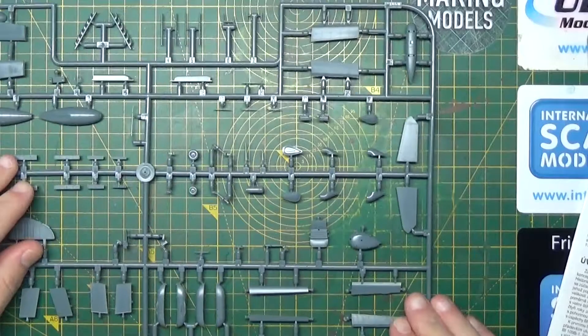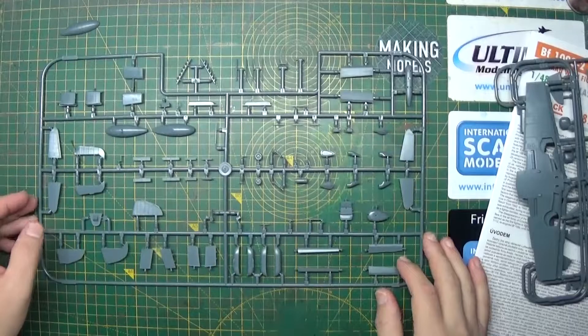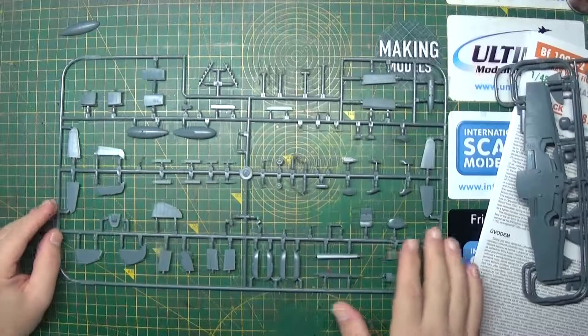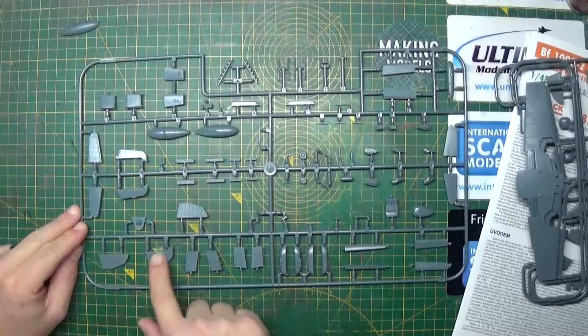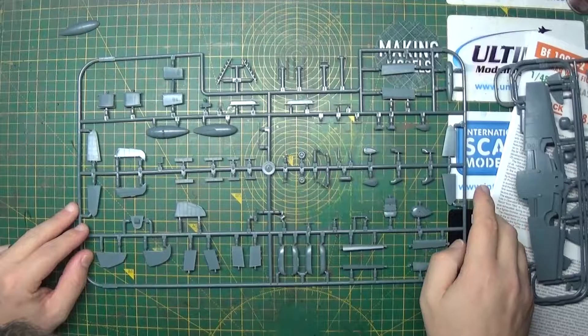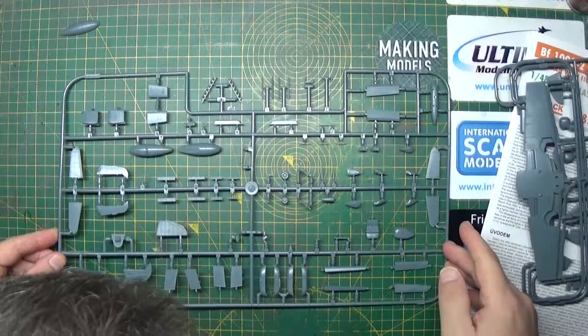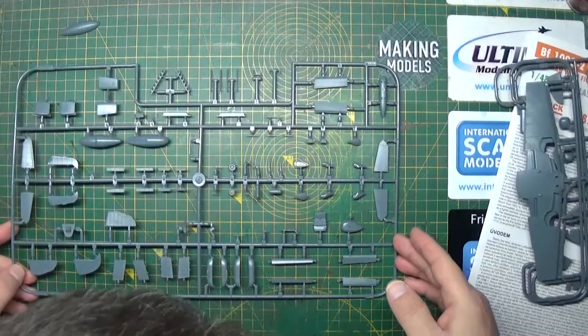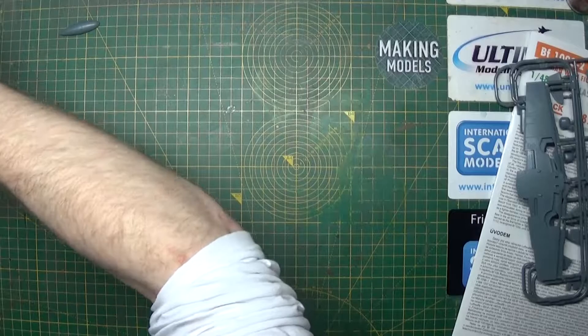So next we have one of the main big sprues. There we go. One here is for the other ancillary bits and pieces with some of the flaps. Some of these might be fuel tanks with the rear tail and all the little bits and pieces. Bits of the wheels or landing gear. Yeah, again, the detail is nice, crisp, sharp—no flash or anything like that, not that I can see at the moment. So that's the first big one.